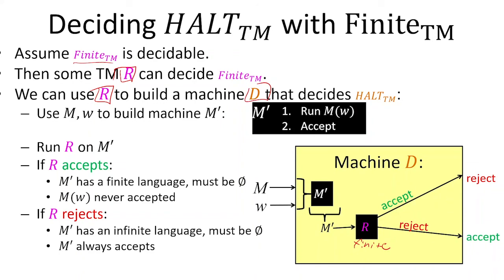The way we do that: first build M prime — the machine that says 'run M on W, then accept' — then give the source for M prime as input to R. If R tells us the language of that machine was finite, that means it was empty, so M on W must have run forever because we never accepted anything — so we return false. If however the language was infinite, that means it was the set of all strings, so M on W must have halted and we got to the accept line — so we return true. By knowing the language of M prime, we can determine whether M halted on W.